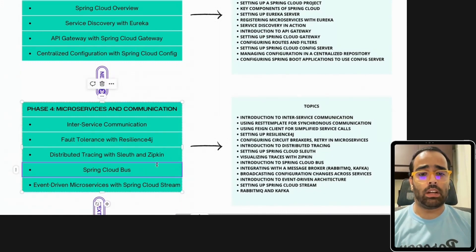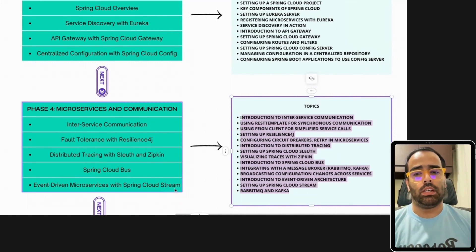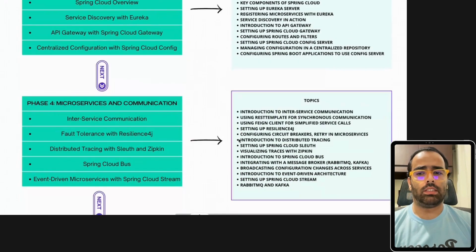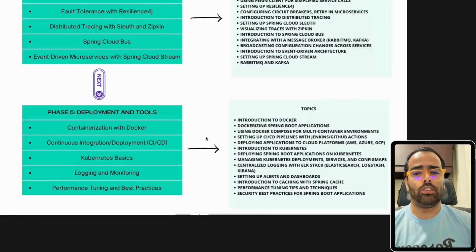Spring Cloud Bus is also part of this phase. You should be aware of Kafka and RabbitMQ. Event-driven architecture is very popular — everything happening as events, using streams. You should explore Spring Cloud Stream to implement event-driven microservices. These advanced concepts make your services more reliable, better monitored through distributed tracing, and leverage event-driven architecture.